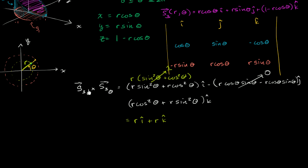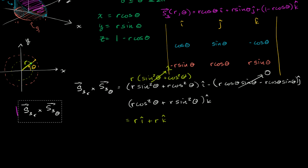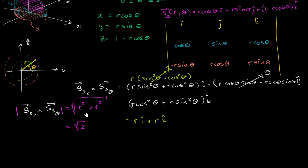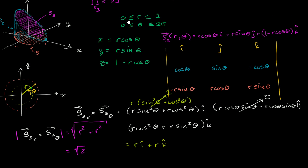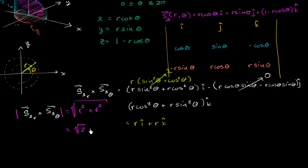The magnitude of this cross product is the square root of r² + r², which equals the square root of 2r², which simplifies to the square root of 2 times r. Since r only takes on positive values, we don't need absolute value. So ds equals √2 · r · dr dθ.